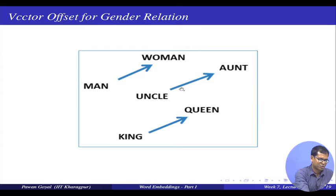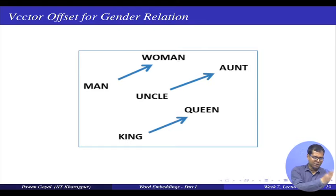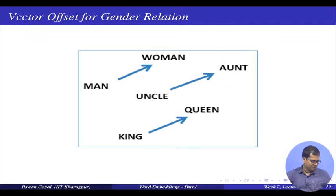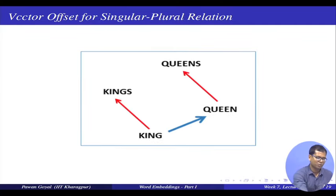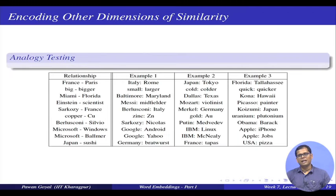Here is the idea. I have my vectors denoted in a two-dimensional plane. To convert any 100-dimensional vectors to a two-dimensional representation, you can use principal component analysis (PCA) or some other methods to project them into a lower dimension. What you are seeing here: the offset between woman and man is similar to what has been observed in uncle and aunt, and king and queen — a very nice regularity. Similarly, for singular to plural: king to kings and queen to queens have similar offsets.